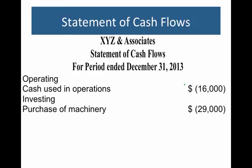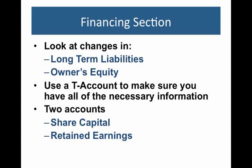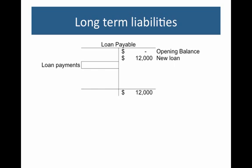The next thing we look at is the financing section, where we look at the remaining parts of the statement of financial position: your long-term liabilities and your owner's equity. Again, use a T-account to make sure you have all the info. Within owner's equity, you need to look at two accounts: share capital and retained earnings. Starting with liabilities — we have our loan payable. We had no loan at the beginning of the year since we just started business. We took out a new loan for $12,000, and since there were no repayments, our ending balance was $12,000. Next is share capital: beginning of business we had nothing, but we issued shares worth $100,000. If we'd bought back any shares during the period they would show up on the left side of the T-account, but that didn't happen. So we know we received $100,000 in cash from issuing shares.